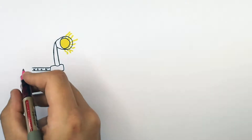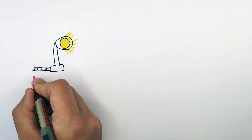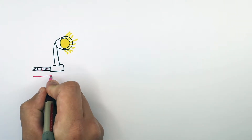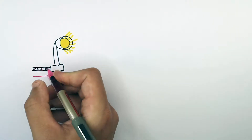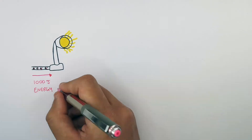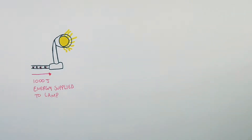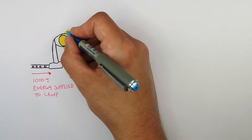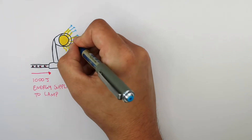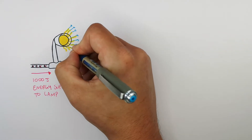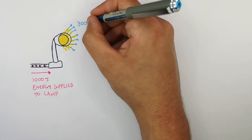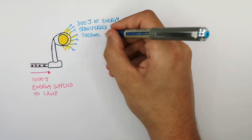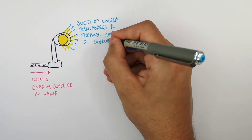This lamp has 1,000 joules of energy supplied to it, so the total input energy into the lamp is 1,000 joules. And 300 joules of energy is transferred to the thermal stores of the surroundings.